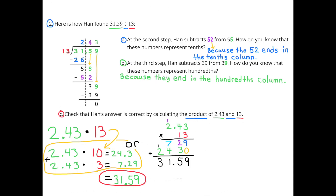Number 2. Here is how Hahn found 31 and 59 hundredths divided by 13. A. At the second step, Hahn subtracts 52 from 55. How do you know that these numbers represent tenths? I know that those numbers represent tenths because the 52 ends in the tenths column.